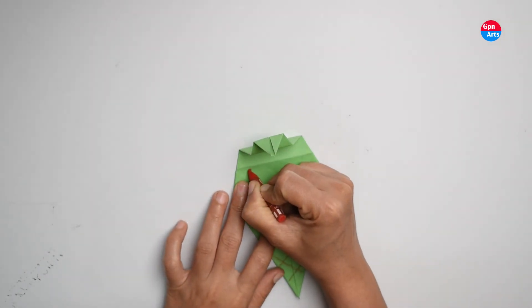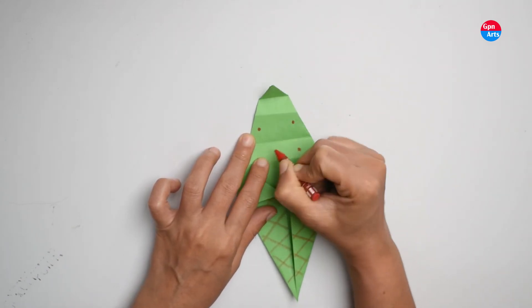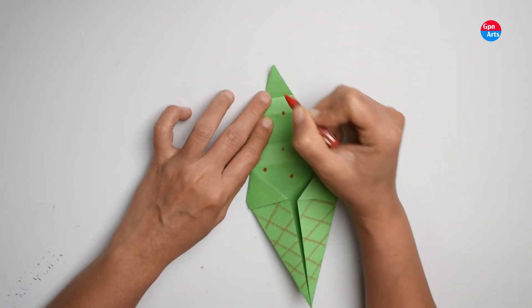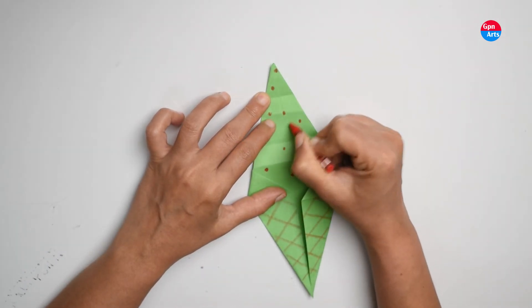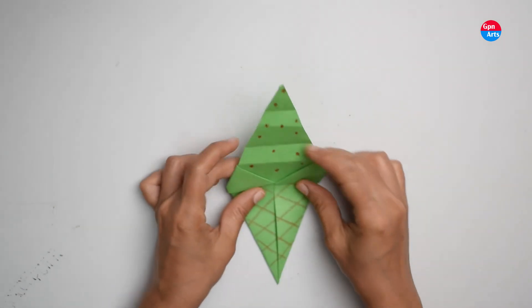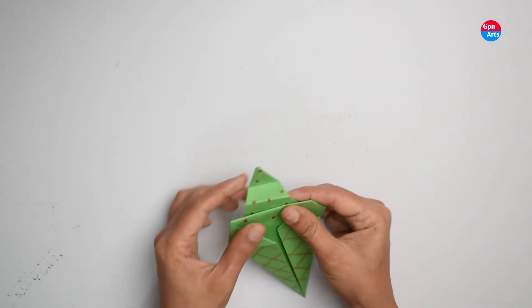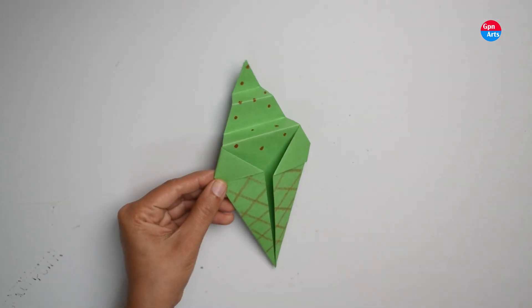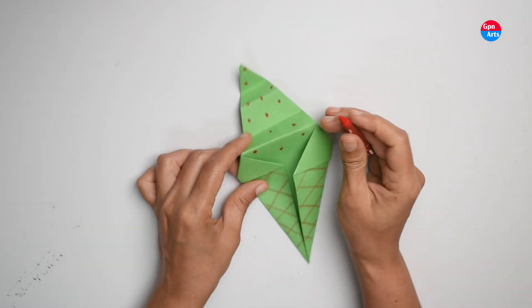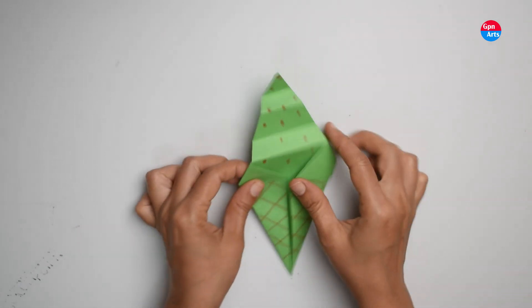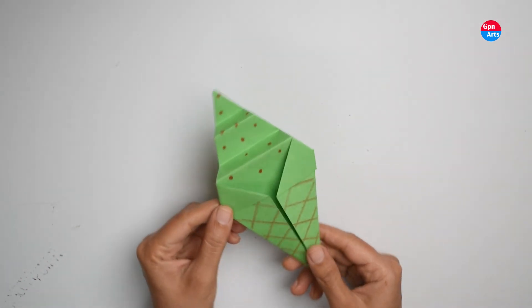Now take a red crayon and put dots. Isn't it looking nice? And here our ice cream cone is ready.